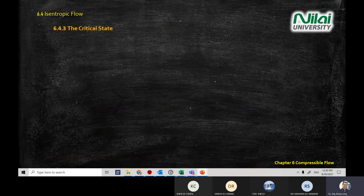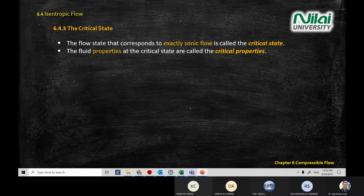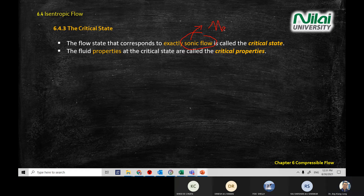The next one is critical state. Critical state is where you have sonic flow. The word sonic means you have a Mach number equal to one.